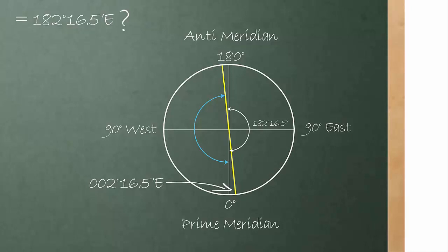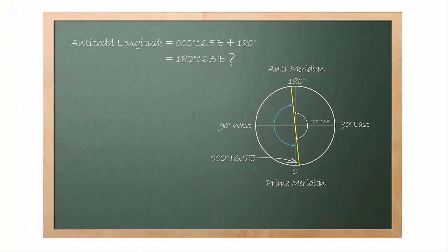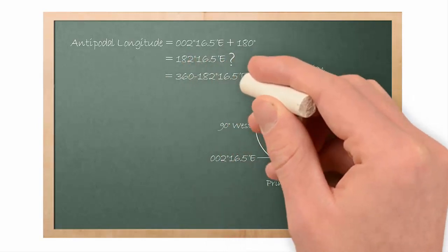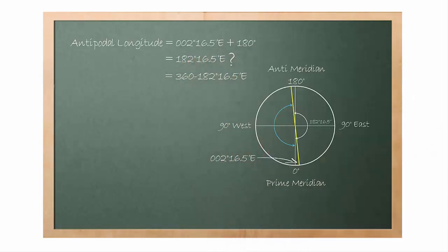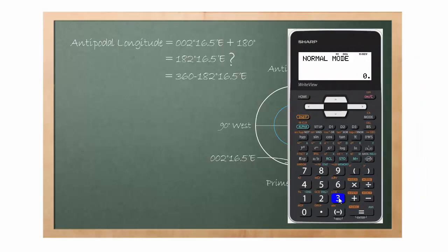To get the angle marked in blue, we need to subtract 182 degree, 16.5 minute from 360 degree. 360 degree is the total amount of angle from a complete circle.